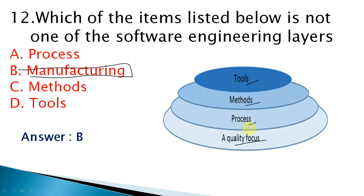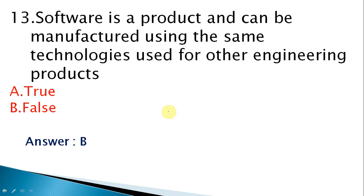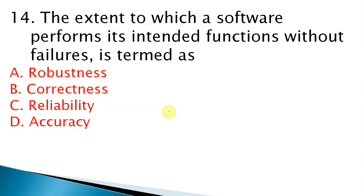Thirteenth question: software is a product that can be manufactured using the same technologies used for other engineering products — this statement is false. Software is developed by humans, whereas other engineering products are manufactured by machines.